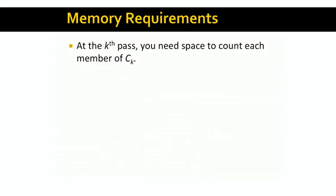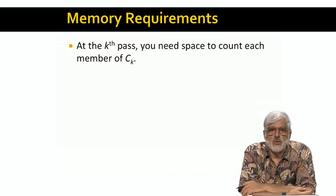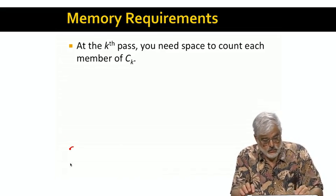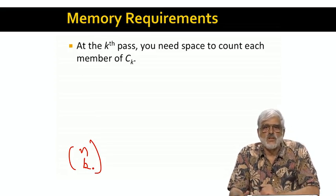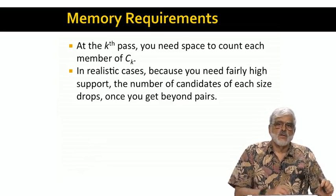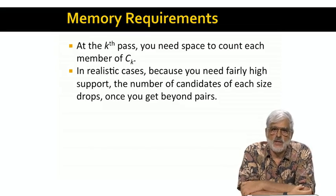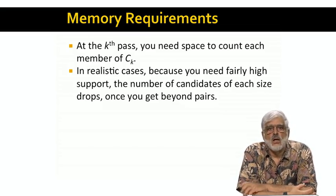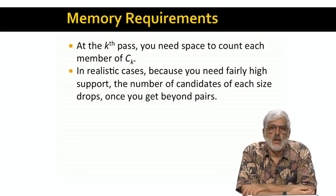The space needed on the Kth pass is proportional to the number of sets in CK. In principle, there could be as many as n-choose-k candidate sets of size k, if there are n items, so the space requirement could grow painfully as k increases. But in cases where this method is used in practice, the support threshold is high enough that as k increases beyond 2, the number of candidate sets that can be formed from the frequent sets on the previous pass actually decreases rather than increases. Thus, the memory requirements peak at k equals 2, and that's why we concentrate on finding frequent pairs, and why the more advanced algorithms we'll see in the next unit differ from a priori in how they handle the pairs.